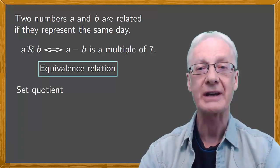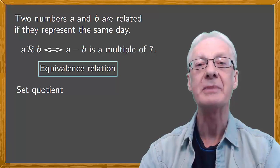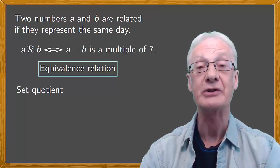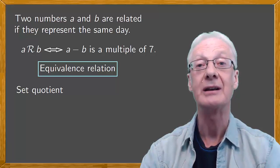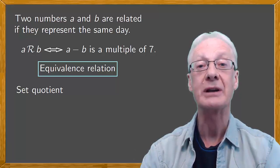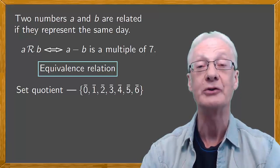Now let's consider the quotient set. Clearly, this can be identified with the days of the week: Sunday, Monday, Tuesday, Wednesday, Thursday, Friday, and Saturday, or with their numerical representation, which we can show by the numbers 0, 1, 2, 3, 4, 5, and 6, usually with a bar over the top.